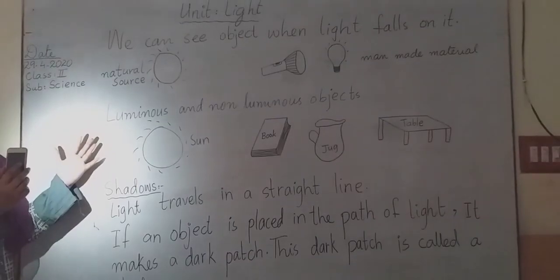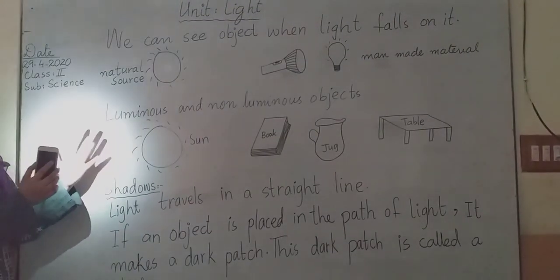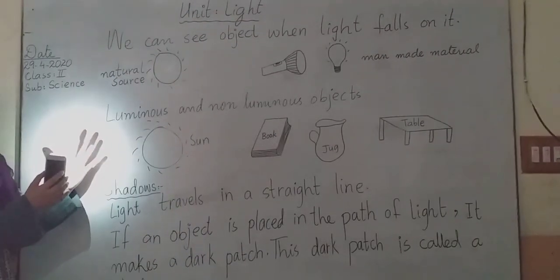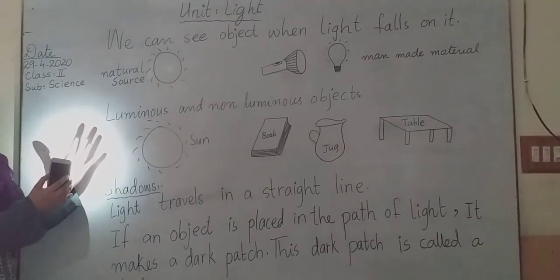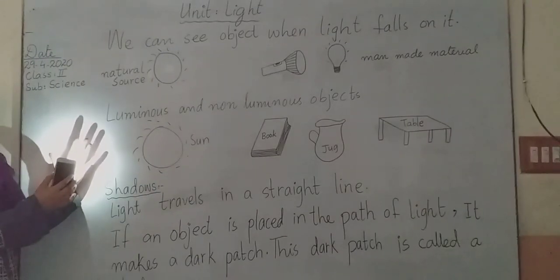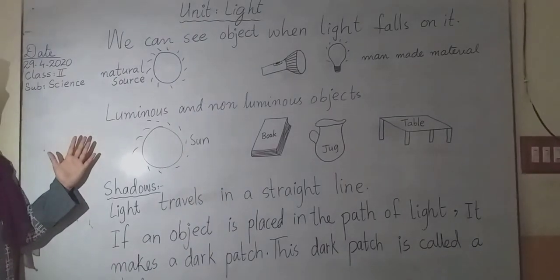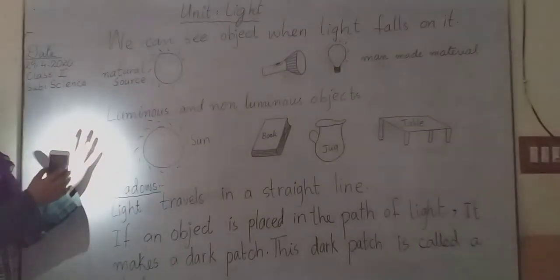I have a mobile and I have a hand like this. When we are sitting near the source, our shadow is big. And when the source of light is far, then the shadow is small, like this.